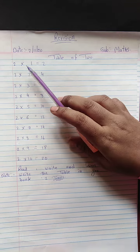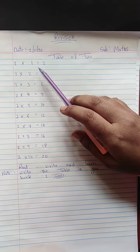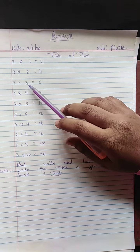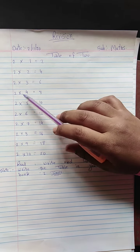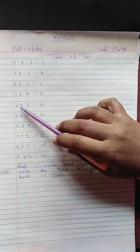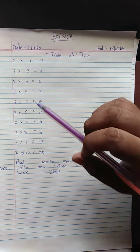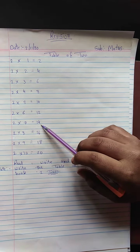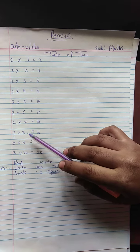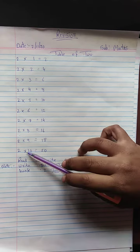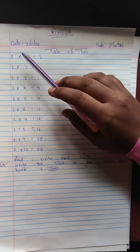Table of 2. 2 times 1 is 2. 2 twos are 4. 2 threes are 6. 2 fours are 8. 2 fives are 10. 2 sixes are 12. 2 sevens are 14. 2 eights are 16. 2 nines are 18. 2 tens are 20.